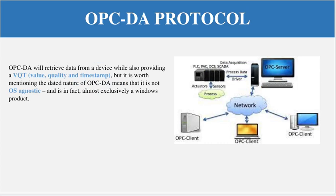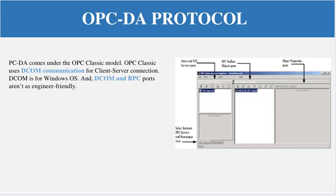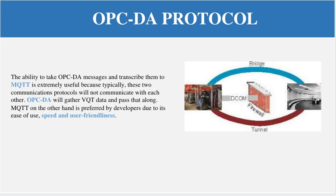OPC DA retrieves data from a device while also providing VQT — Value, Quality, and Timestamp — data. However, it is worth mentioning that OPC DA is not OS-agnostic; it is in fact almost exclusively a Windows product. OPC DA comes under the classic model, and OPC classic uses DCOM communication for client-server connection. DCOM is for Windows OS, and DCOM and RPC ports are not as engineer-friendly. The ability to take OPC DA messages and transcribe them to MQTT is extremely useful because typically these two communication protocols will not communicate with each other. OPC DA gathers VQT data and passes it along, while MQTT is preferred by developers due to its ease of use, speed, and user-friendliness.